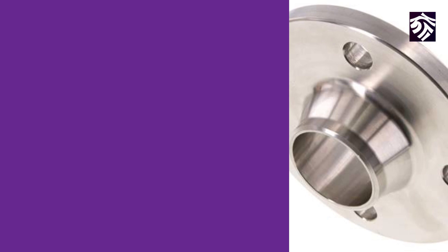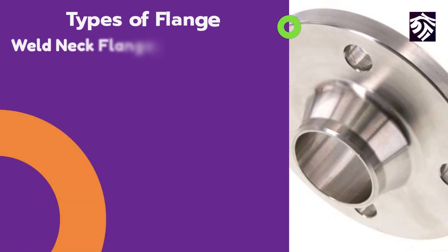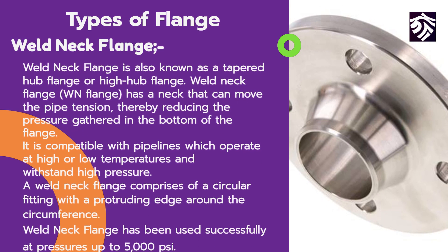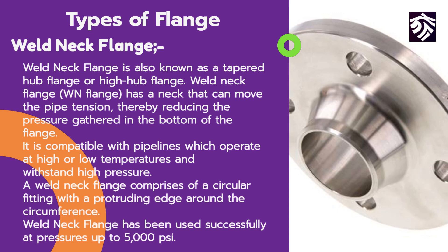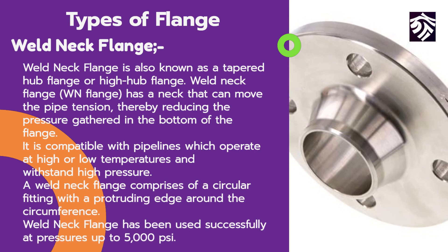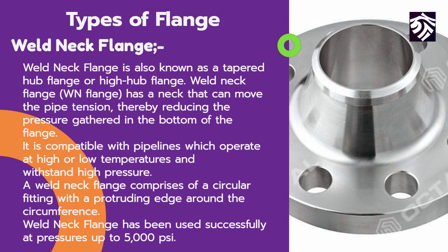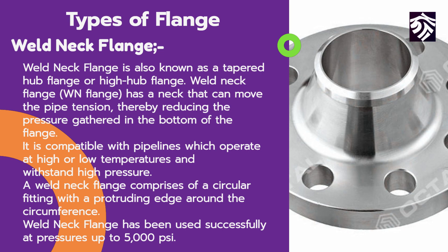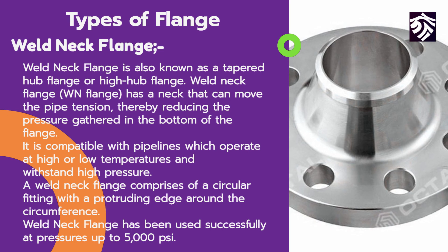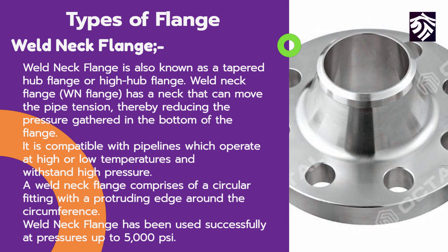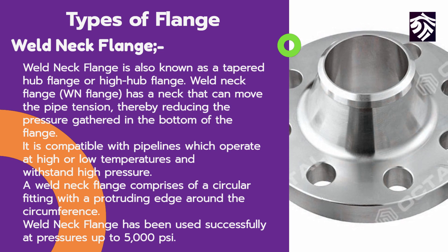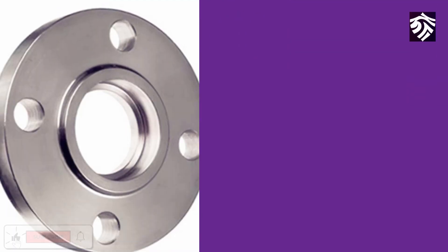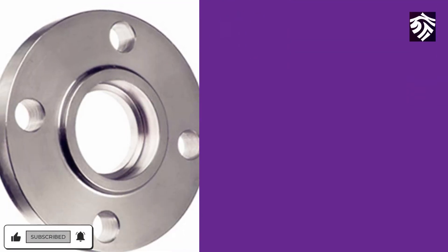Another type of flange is the weld neck flange, also known as a tapered hub flange or high hub flange. The weld neck flange has a neck that can move the pipe tension, thereby reducing the pressure gathered at the bottom of the flange. It is compatible with pipelines which operate at high or low temperatures and can withstand high pressure. A weld neck flange comprises a circular fitting with a protruding edge around the circumference, and has been used successfully at pressures up to 5,000 pounds per square inch.